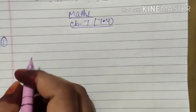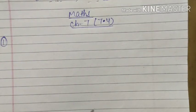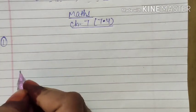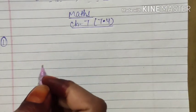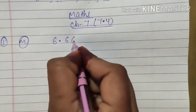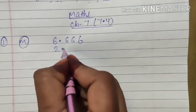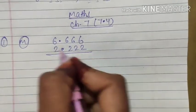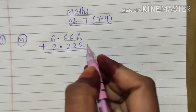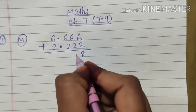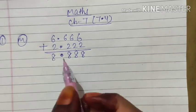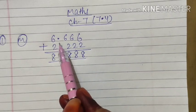Let me solve any one part. All the parts are same, you can solve any one. Let me solve M part, that is 6.666, then 2.222. Since it is addition, so we will put here plus sign. Now the thing is simple addition: 6 plus 2 is 8, 6 plus 2 is 8, 6 plus 2 is 8. Since this is decimal, so here we will have decimal, and this is it.